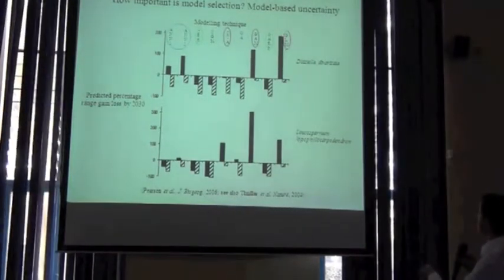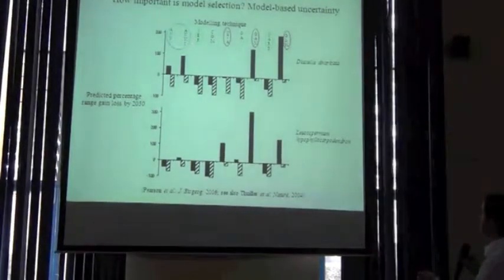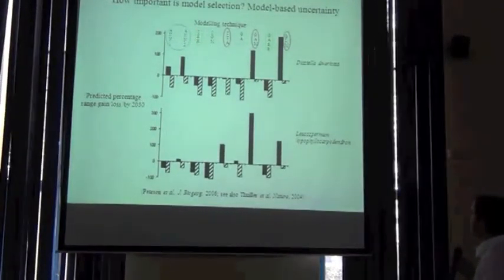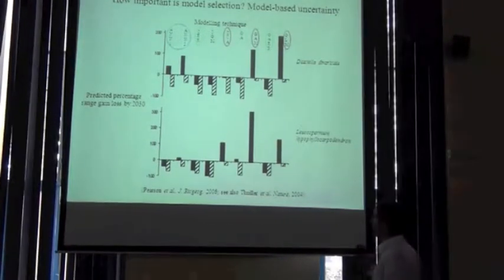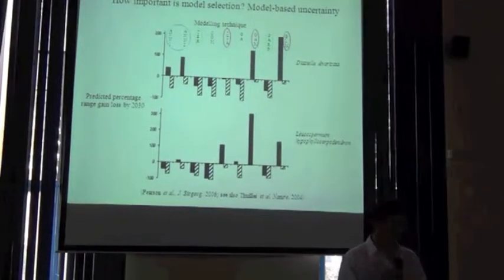So GARP that is quite complex in many ways, groups gave very similar predictions to this very simple climate envelope range.